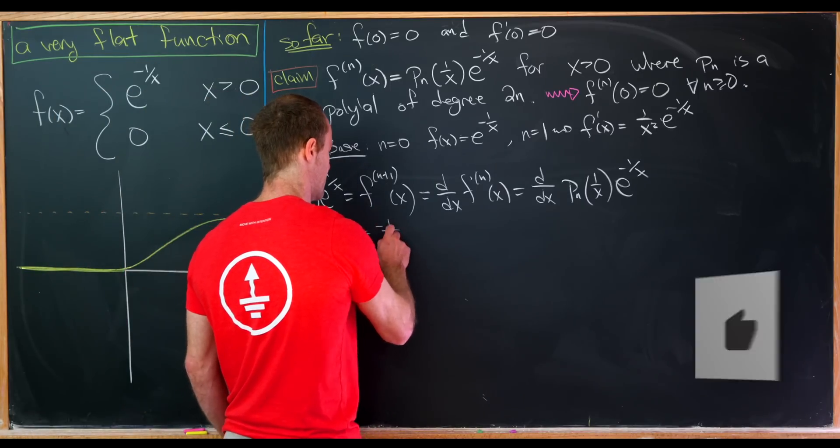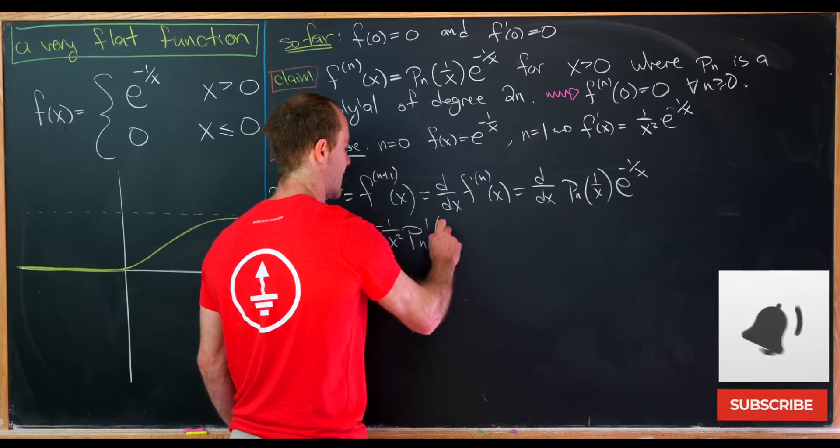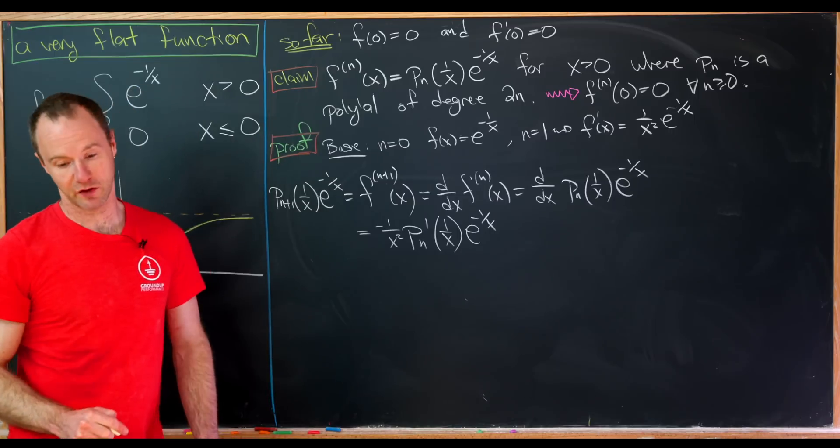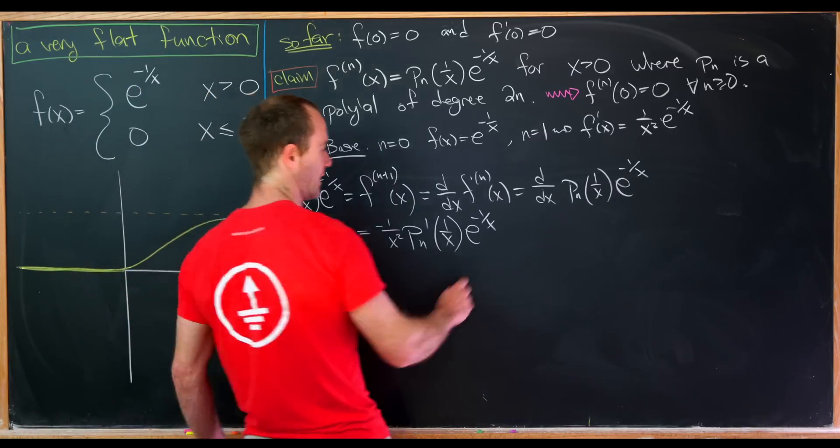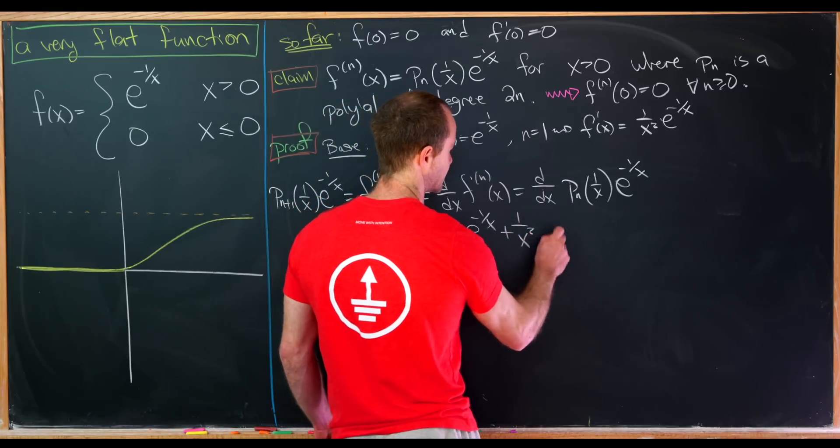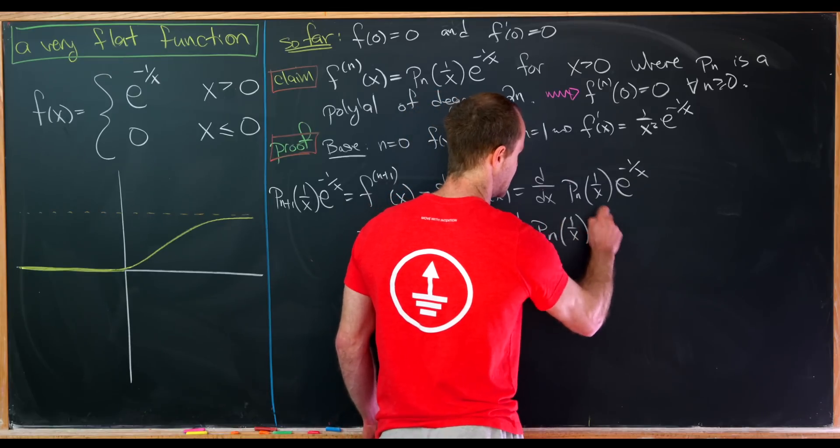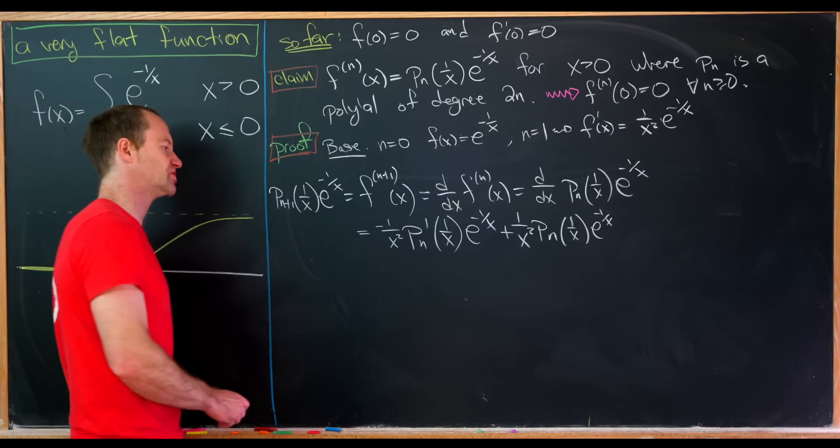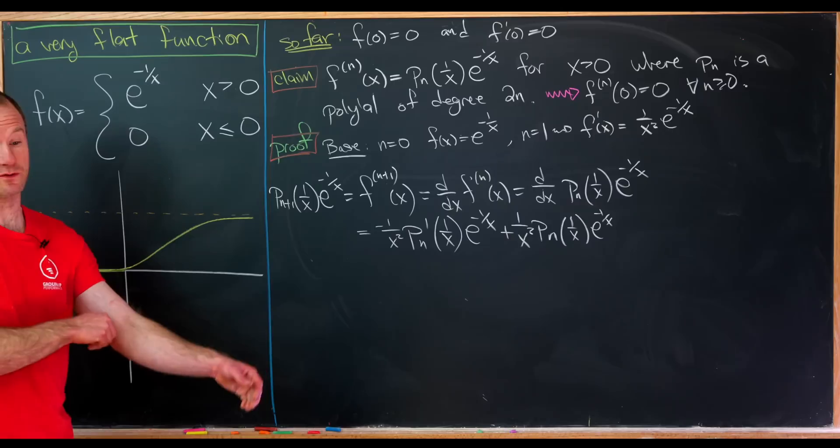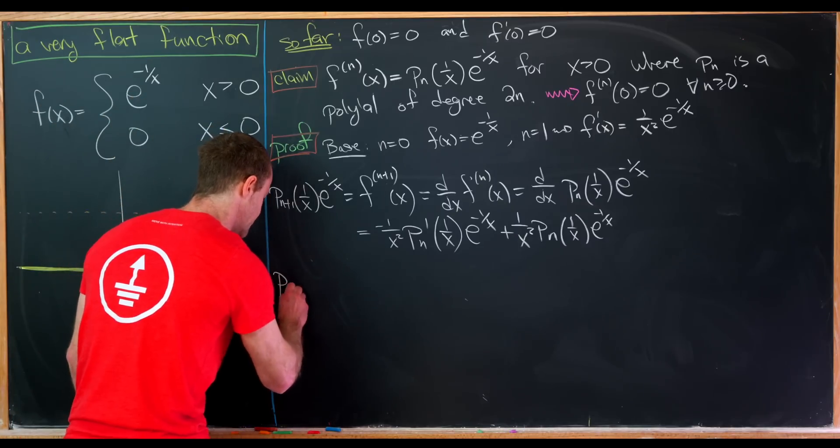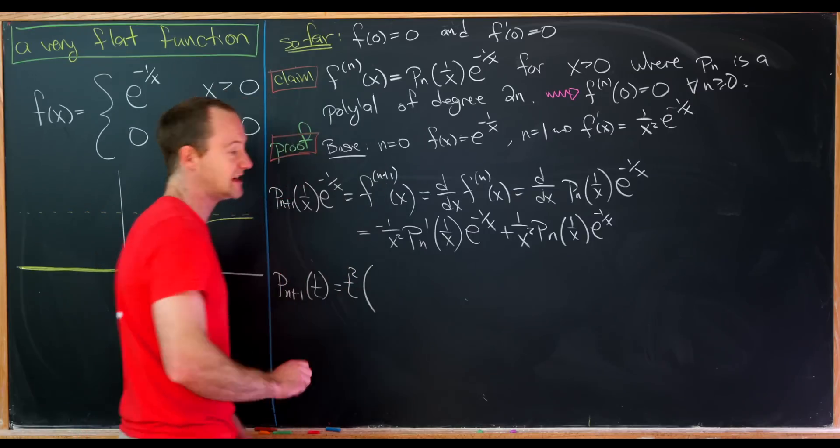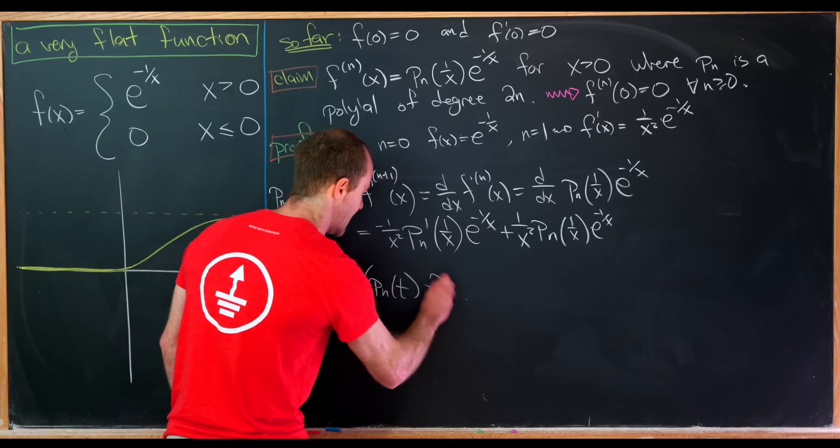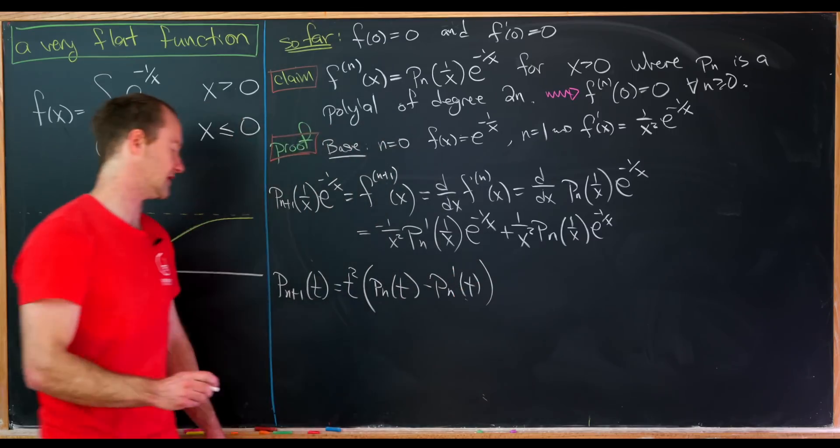But now we can evaluate that using the product rule and the chain rule. So let's see, that's going to give us something like minus 1 over x squared times p sub n prime of 1 over x times e to the minus 1 over x. That's like taking the derivative of the polynomial part. And then after that, we'll have plus 1 over x squared times p sub n of 1 over x e to the minus 1 over x. That's from taking the derivative of the exponential part. But now doing our change of variables will allow us to compute these polynomials fairly quickly. So notice that p sub n plus 1 of t is in fact equal to t squared times, let's see, we have p sub n of t minus p sub n prime of t.